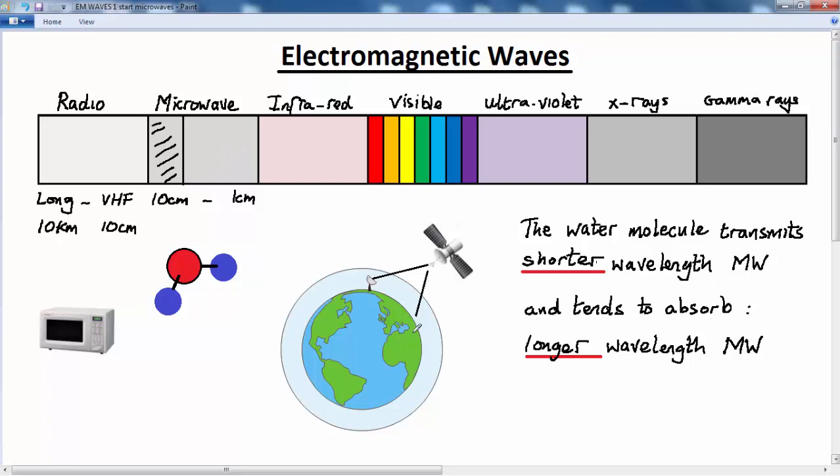So these frequencies here, these wavelengths, must be used for telecommunications, for communications purposes and for sending data up to satellites and back to earth again. And they make use of what we call the microwave windows in the atmosphere.